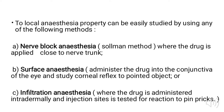The first method is nerve block anesthesia, also known as the Schmalb method, where the drug is applied close to the nerve trunk. Then surface anesthesia — the drug is administered into the conjunctiva of the eyes and the corneal reflex to a pointed object is studied. The last method is infiltration anesthesia, where the drug is administered intradermally and the injection site is tested for reaction to pin pricks.